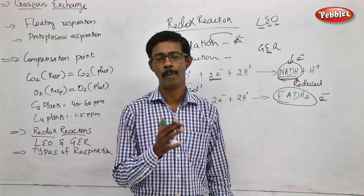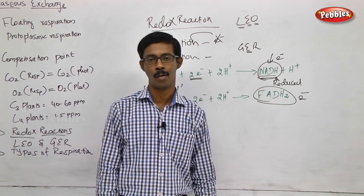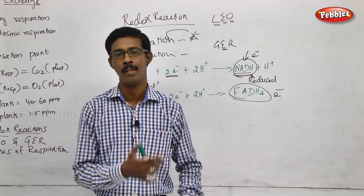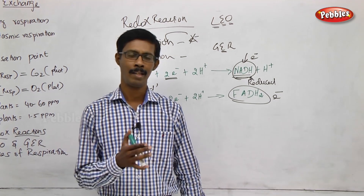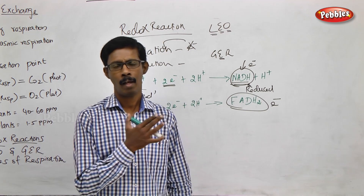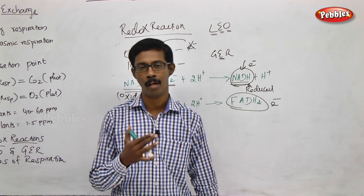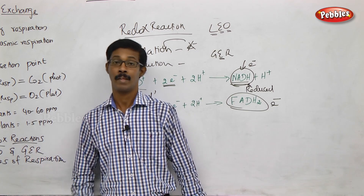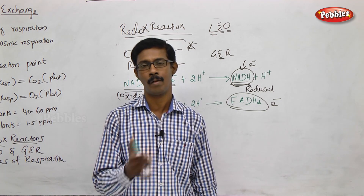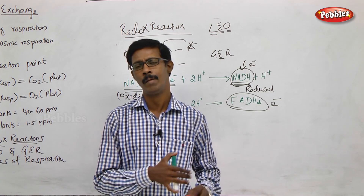In aerobic respiration, complete oxidation of food occurs only in the presence of oxygen. Glucose undergoes complete breakdown, releasing carbon dioxide. In anaerobic respiration, there is incomplete breakdown — for example, alcohol formation or fermentation. If oxygen is available, complete oxidation occurs; if not, anaerobic respiration takes place with incomplete breakdown of the respiratory substrate.